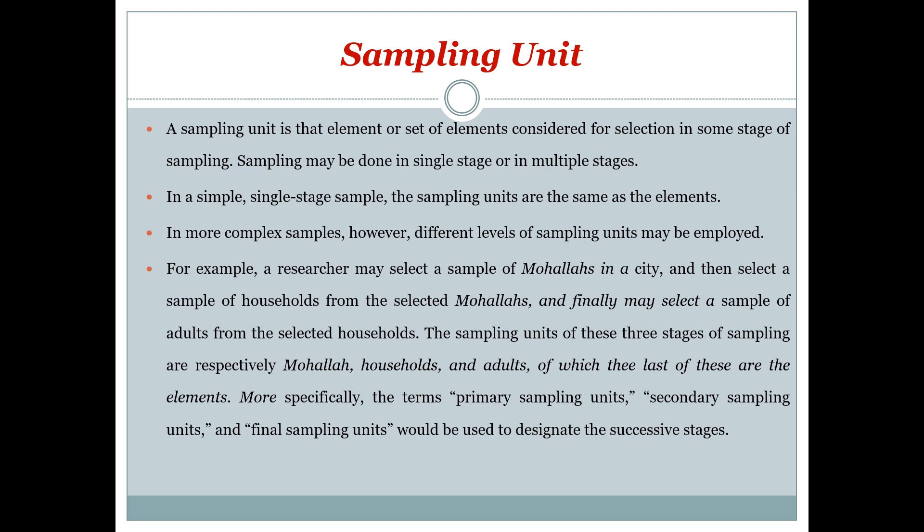More specifically, the terms primary sampling unit, secondary sampling unit, and final sampling unit are used to designate the successive stages. You can also refer to these as stage 1, stage 2, and stage 3.